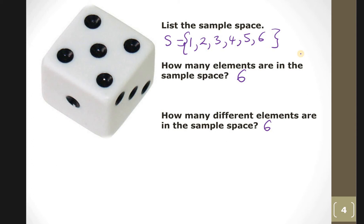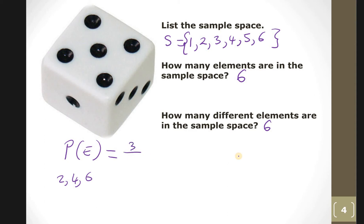Remember: first list the sample space, work out how many elements, then identify the different elements. What is the probability of getting an even number? Even numbers are two, four, six — that's three out of six, which simplifies to a half.